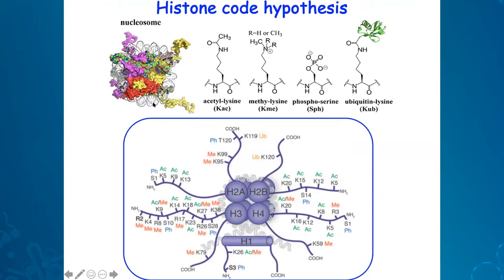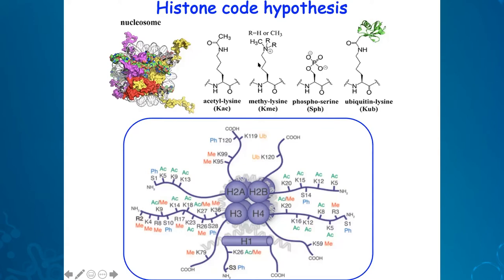Nucleosome is the simplest organizational unit. As we all know, the histone tails are subject to post-translational modification. There are certain key residues like lysine residues in the histone tails which get acetylated as well as methylated. Methylation of lysines can be monomethylation, dimethylation, or trimethylation depending upon the presence of the methyl moiety on the epsilon amino group of the lysine nitrogen. There could also be phosphorylation events which happen on serine residues. These modifications actually happen in a combinatorial manner in the histone landscape.